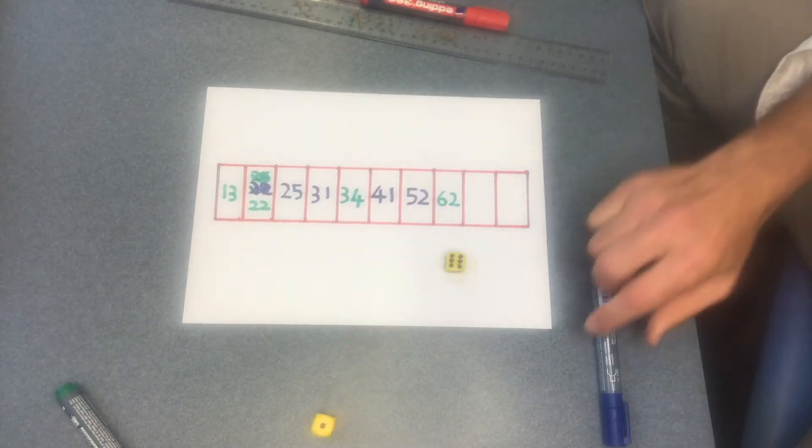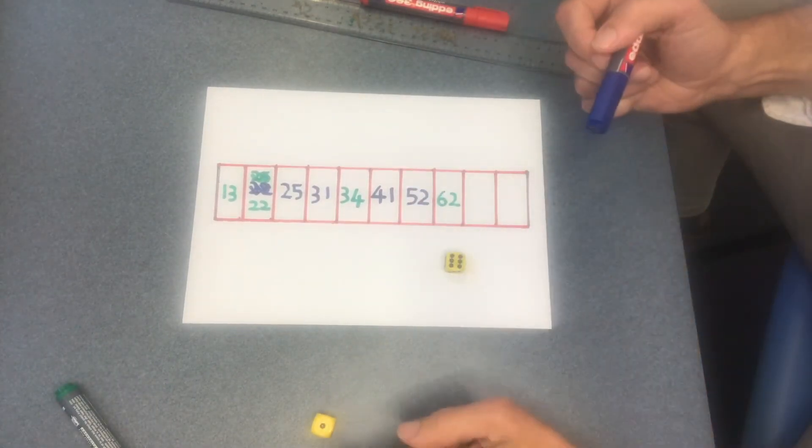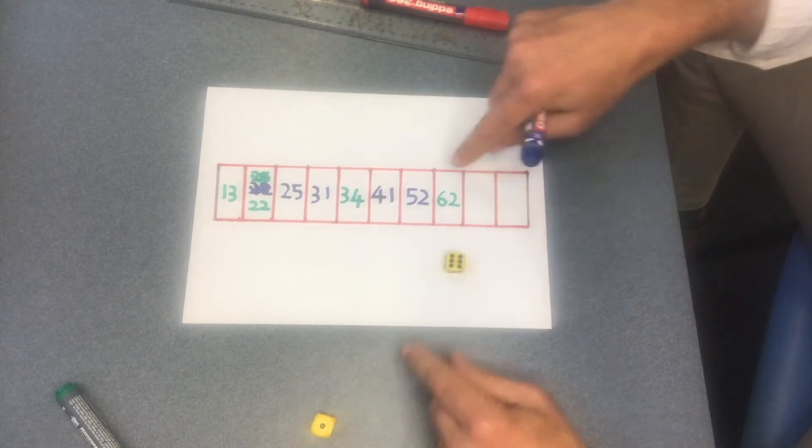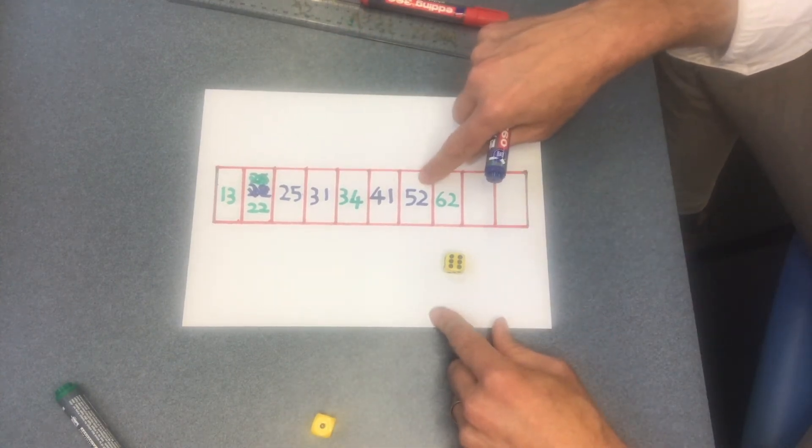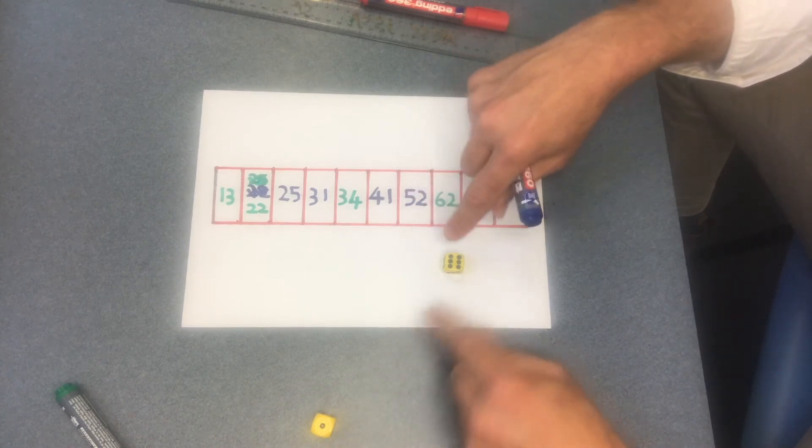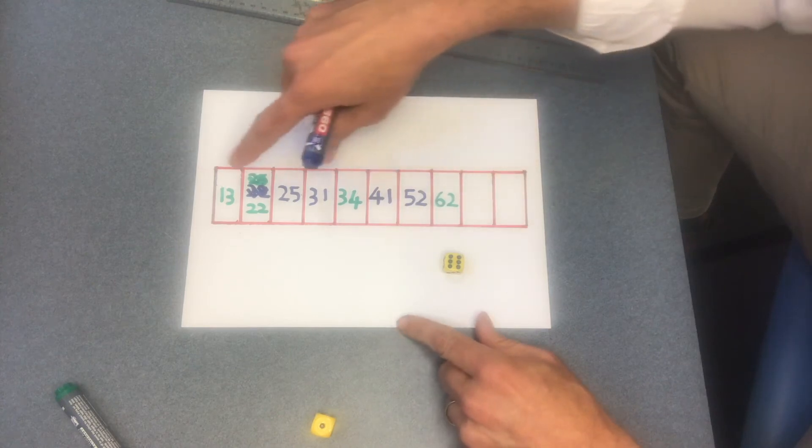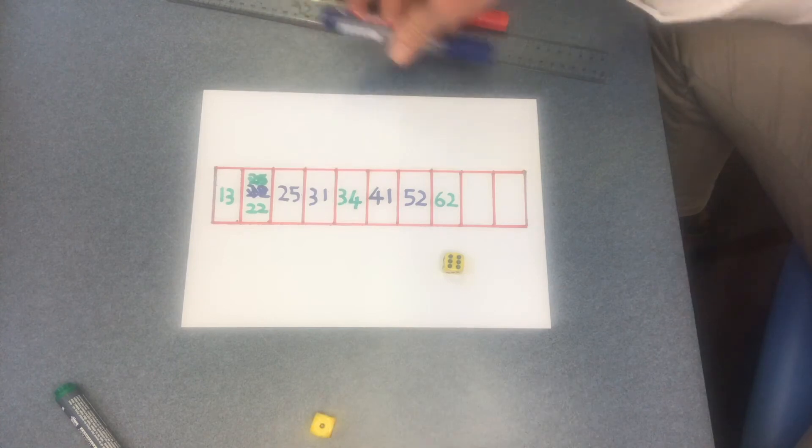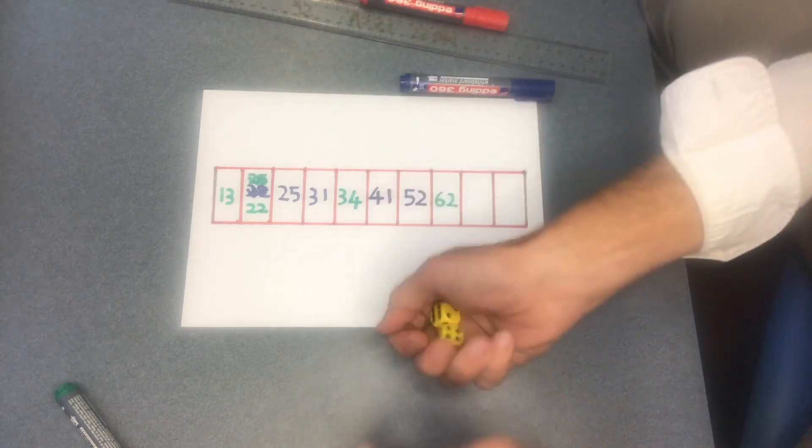Now it becomes my turn. I roll 6 and 1. I can't put it in any space because 61 is below 62 and there's no space between 52 and 62, and then the other number is 16 which there is no space for between 13 and 22, so I effectively miss a turn there. Then it becomes the green person's shot, they get 6 and 1, they can't do it either.